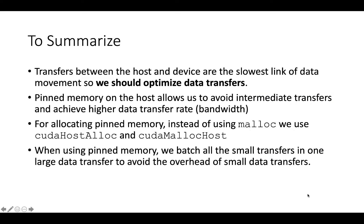We have reached the end of the first lecture on how to optimize host-device data transfer. In this lecture, I would stress four points. First, it is important to optimize data transfer. Second, we can use pinned host memory to avoid the intermediate step when using DMA. Third, we use cudaHostAlloc instead of the usual malloc or new to pin host memory. Finally, one further optimization technique is that we can batch all the small transfers into one large data transfer. In the next lecture, we will focus on a second optimization technique to improve the performance of data transfer between host and device memory. We are done with this lecture — talk to you soon!